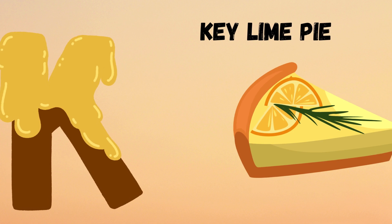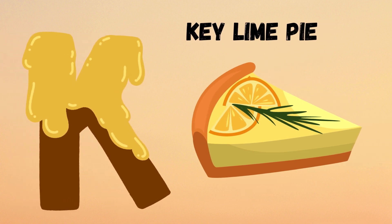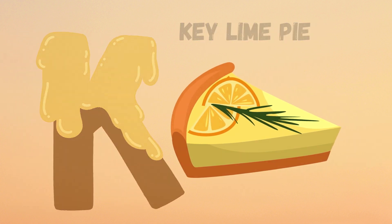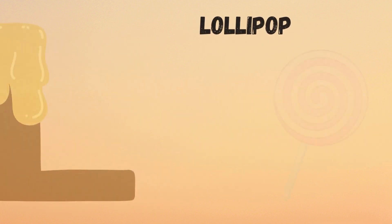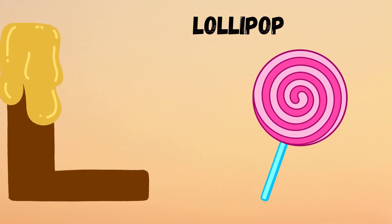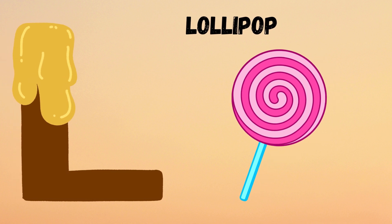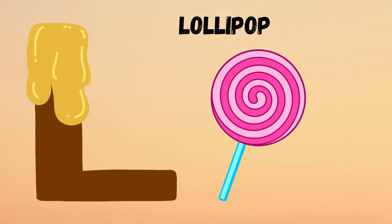Jelly Bean. K is for Key Lime Pie. K, K. Key Lime Pie. L is for Lollipop. L, L. Lollipop.